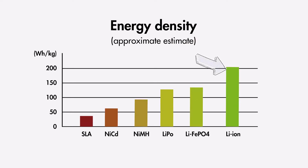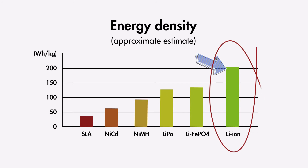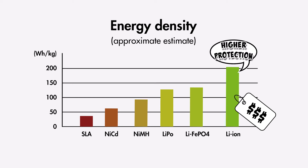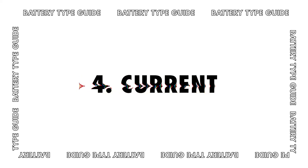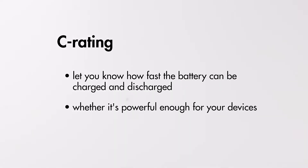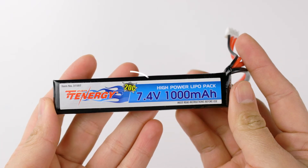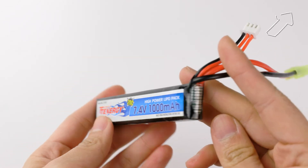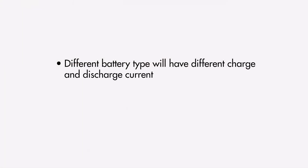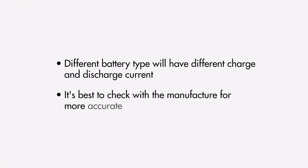So far we've learned that lithium ion has the highest energy density — but does that mean we should all use lithium ion batteries? The answer is no. While they're powerful and compact, they also cost more and require higher protection, so depending on your project and budget, other battery types may be more suitable. Next is charge and discharge current, often expressed as C-rating, which tells you how fast a battery can be charged and discharged and whether it's powerful enough for your devices. You can often find it on the battery's label or datasheet.